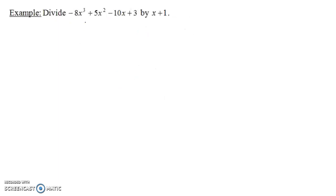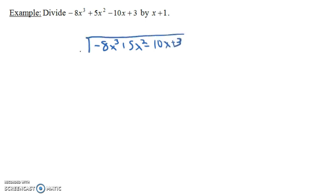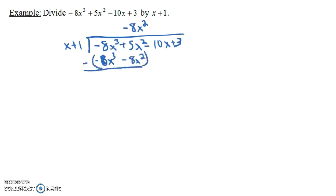Now in this problem, we have a cubic polynomial: negative 8x cubed plus 5x squared minus 10x plus 3. We want to divide this by x plus 1. We have to say what times x gives you minus 8x cubed, and it's minus 8x squared. Minus 8x squared times x gives you minus 8x cubed again. And then minus 8x squared times plus 1 is minus 8x squared. We're going to subtract this whole thing.